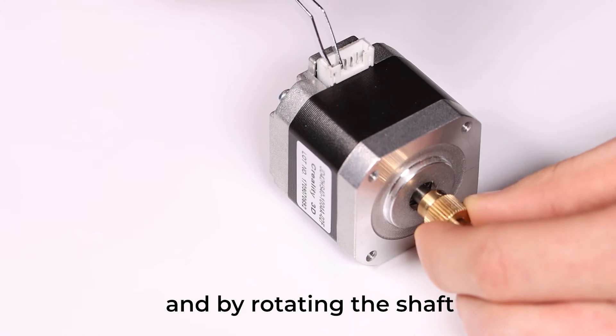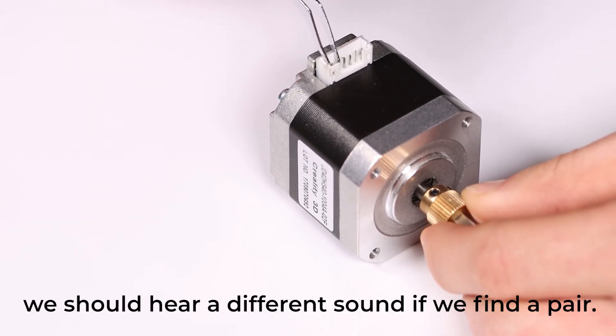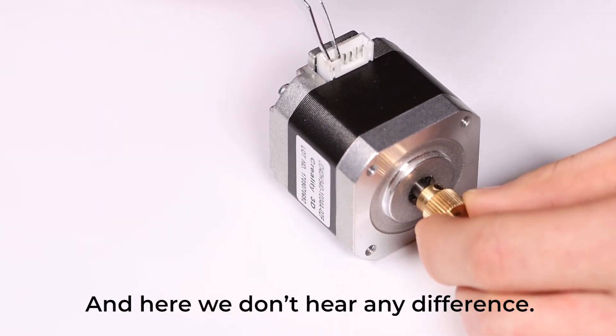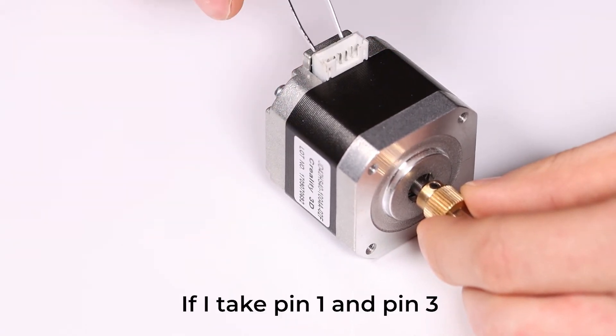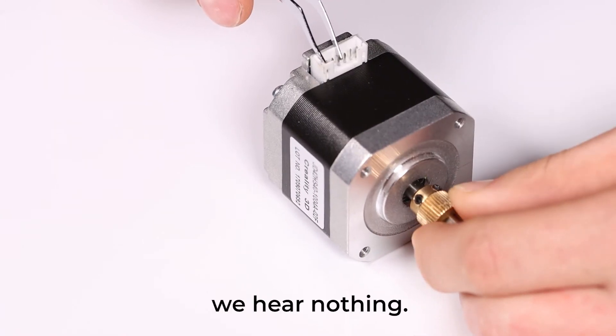By rotating, we should hear a different sound if we find a pair. Here we don't hear any difference. If I take pin one and pin three, we hear nothing.